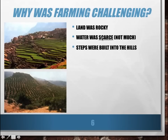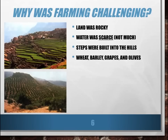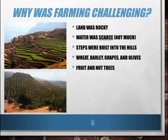They built steps into the hills, just like this picture shows, to create flat spaces in order to grow food. Some of the main crops they grew were wheat, barley, grapes, and olives — all crops that don't necessarily require a lot of water. They also grew fruit and nut trees, which are both types of trees that don't require a lot of water, so they worked well in the climate of Greece.